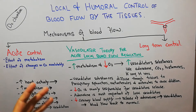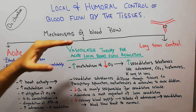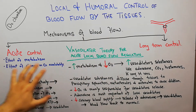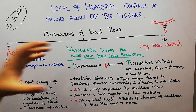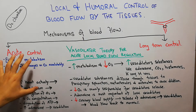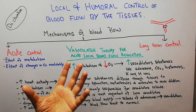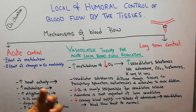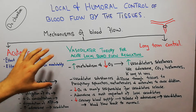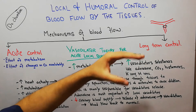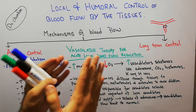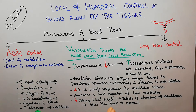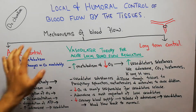The two main mechanisms of blood flow control are acute control and long-term control. Acute control is responsible for rapid changes in blood flow to a tissue — for example, muscle, liver, kidney, heart, or skin. Long-term control is about long-term changes in the tissue. Acute control is due to rapid changes in the diameter of existing blood vessels, while long-term control involves increasing the number of blood vessels.